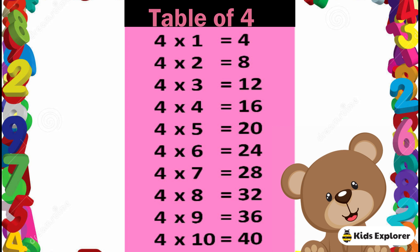Table of 4. 4 1's are 4, 4 2's are 8, 4 3's are 12, 4 4's are 16, 4 5's are 20, 4 6's are 24, 4 7's are 28, 4 8's are 32, 4 9's are 36, 4 10's are 40.